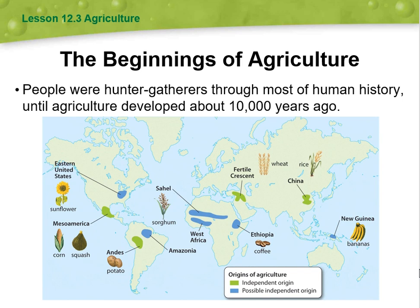People were hunter-gatherers through most of human history until agriculture developed about 10,000 years ago. The following illustrates a map of the world showing the origins of agriculture, with green representing independent origins and blue representing possible independent origins.